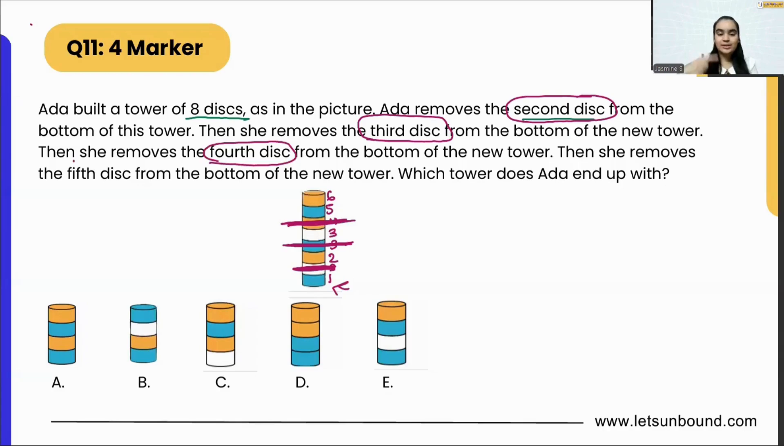Now which ones are the same? One, two, and three are as is, but five and six will again get changed. So this will become four and this will become five. Lastly, she removes the fifth disc from the bottom, which is this one. Now our result should look like blue at the bottom.